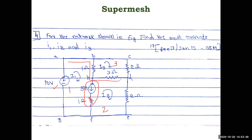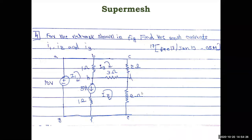Applying the super mesh equation for meshes one and two: 10 minus 1(i1 minus i3) minus 3(i2 minus i3) minus 2i2 equals zero. The constraint equation is: i1 minus i2 equals 5 amps, since the source flows in the direction of i1. For mesh three, write: minus 2i3 minus 3(i3 minus i2) minus 1(i3 minus i1) equals zero. Pause and calculate before checking the answers.